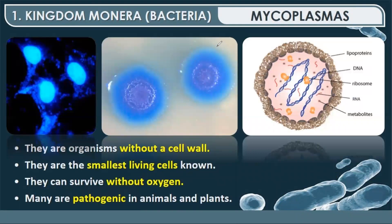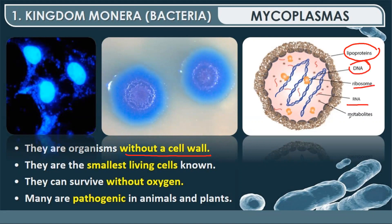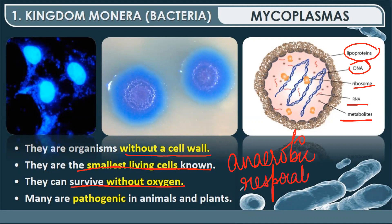The last topic of Monera is mycoplasmas — the smallest living cells known. They lack a cell wall; instead, they have a protective layer made up of lipids and proteins. They also have DNA, ribosomes, RNA and certain metabolites. They can survive without oxygen and are capable of anaerobic respiration. Many are pathogenic in animals and plants.